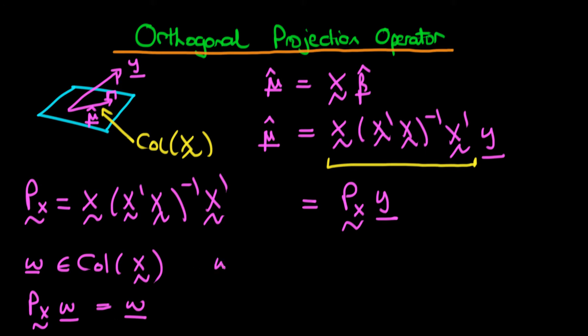Similarly, if we have a vector w which is at right angles with the column space of X, then we should expect that P_X times w should be equal to 0 because there is no way for us to project down that particular vector.